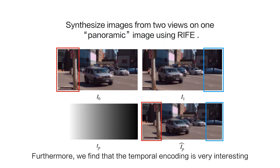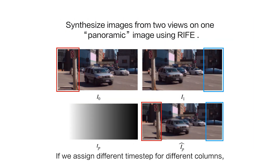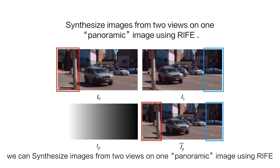Furthermore, we find that the temporal encoding is very interesting. If we assign different time steps to different columns of a target image, we can synthesize images from two views on one panoramic image using RIFE.